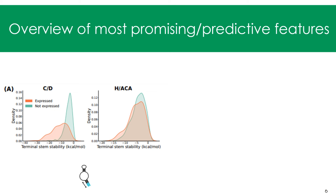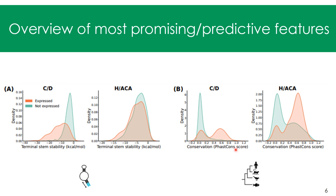First, without getting into the predictions, here is an overview of the distribution of the most promising predictive features. Terminal stem stability seems to be really important for CD box SNORNAs but not for HACA box SNORNAs — CD box SNORNAs with a highly stable terminal stem are mostly expressed, which is not the case for unexpressed SNORNAs. The second most interesting feature is the conservation of the sequence, both for CD and HACA box SNORNAs, where the most conserved SNORNAs are also mostly expressed.